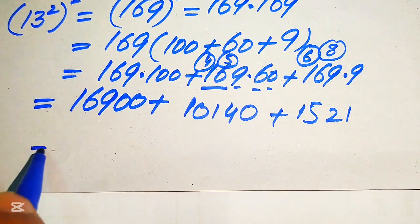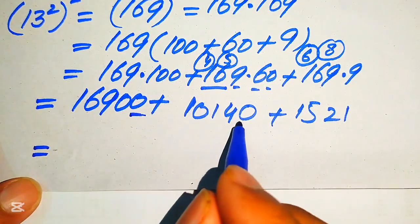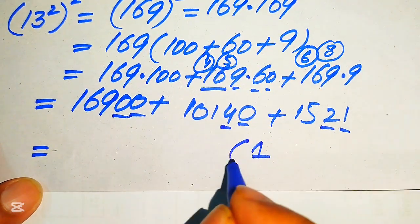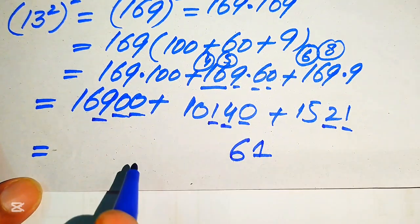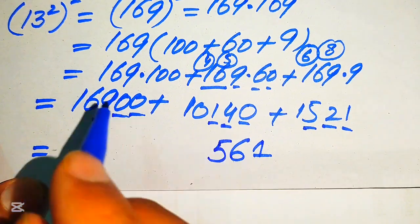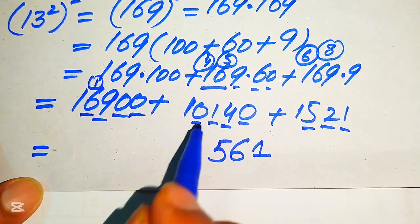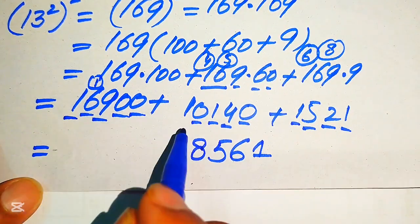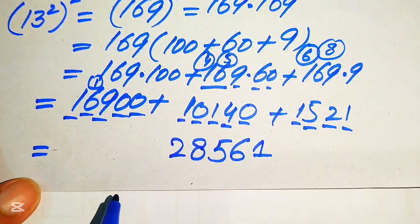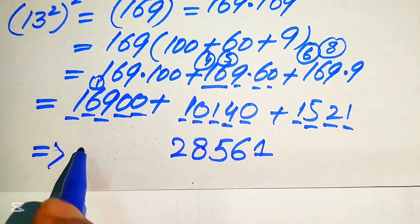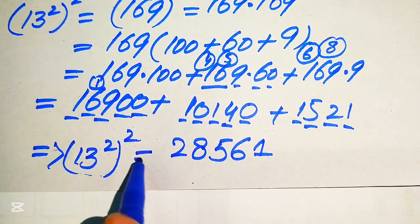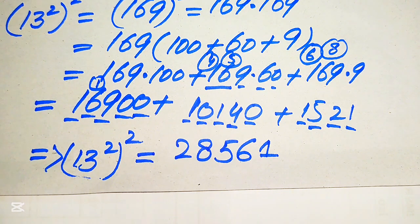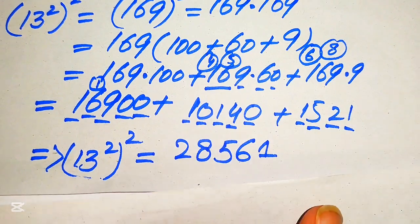Now we sum all these values: 16900 plus 10140 plus 1521. Adding column by column: 0 plus 0 plus 1 is 1; 0 plus 4 plus 2 is 6; 9 plus 1 plus 5 is 15, write 5 carry 1; 6 plus 0 plus 1 plus 1 carry is 8; and finally 1 plus 1 is 2. So 13 squared whole squared equals 28561.